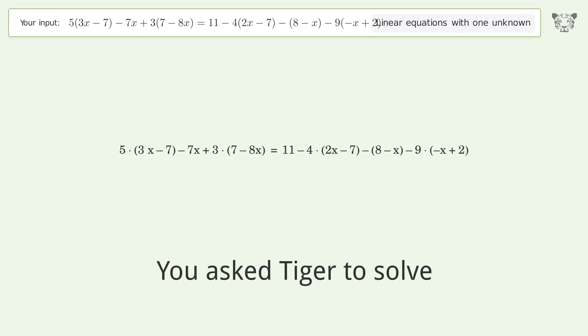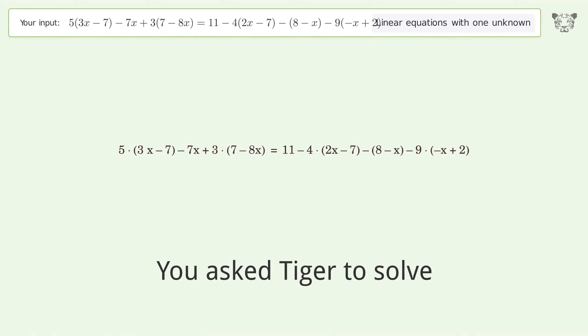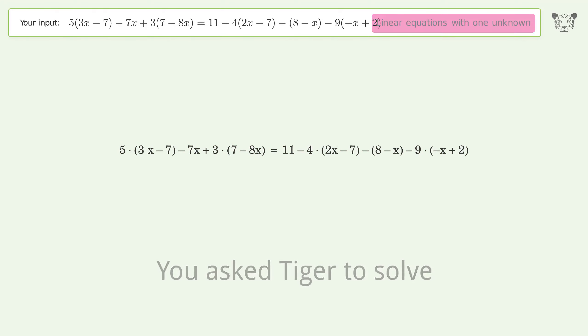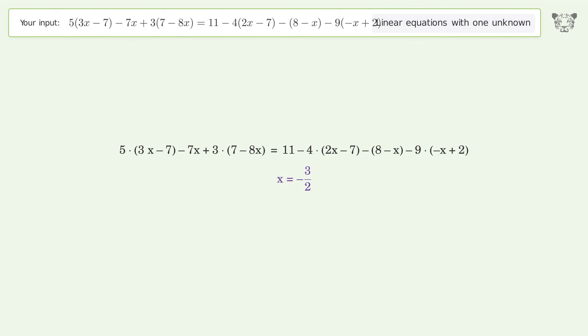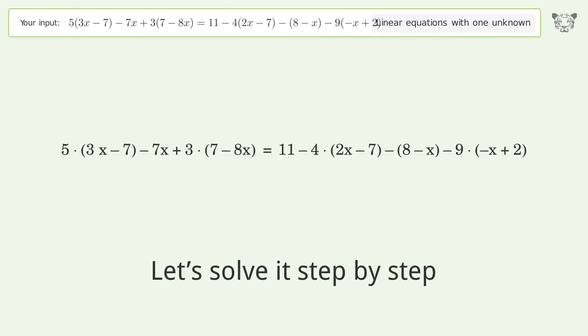You asked Tiger to solve this — it deals with linear equations with one unknown. The final result is x equals negative 3 over 2. Let's solve it step by step.